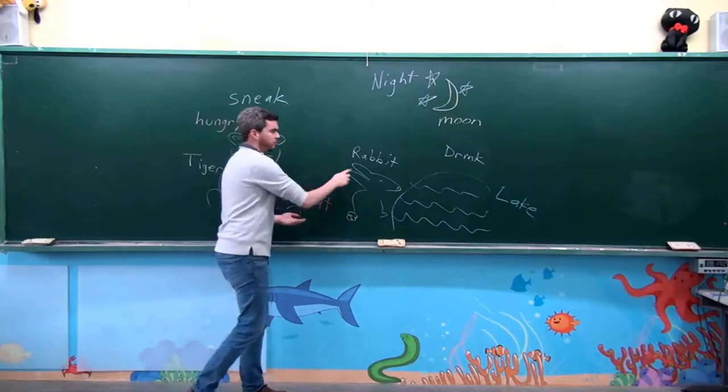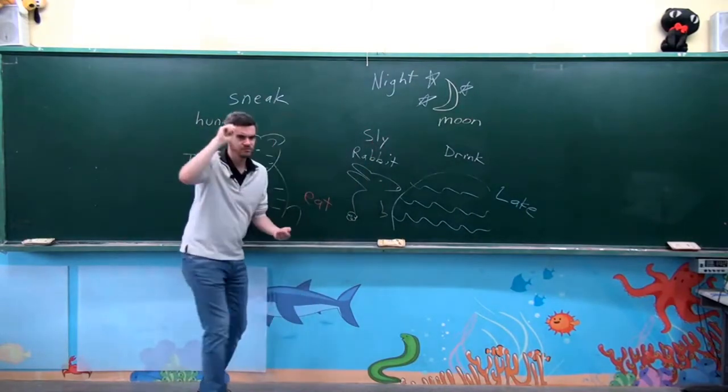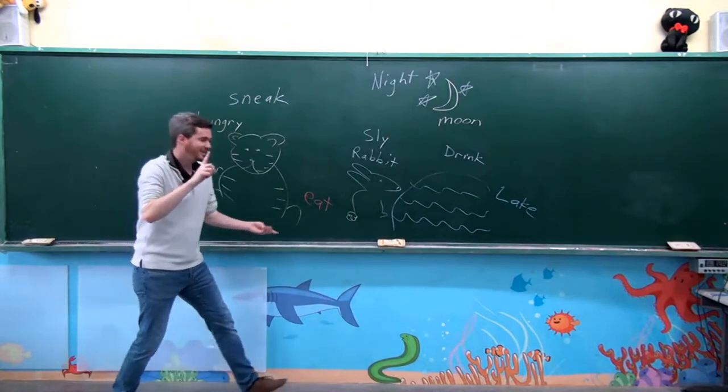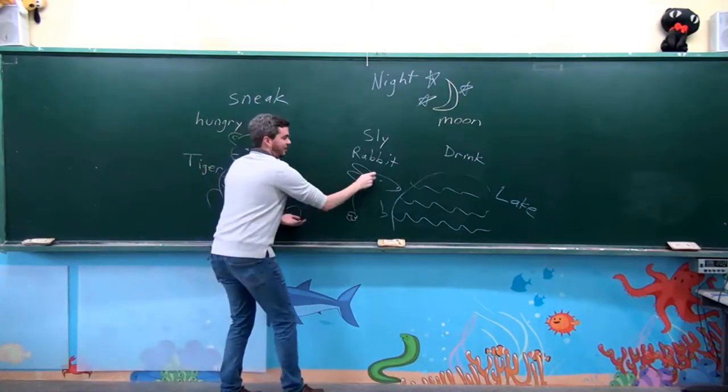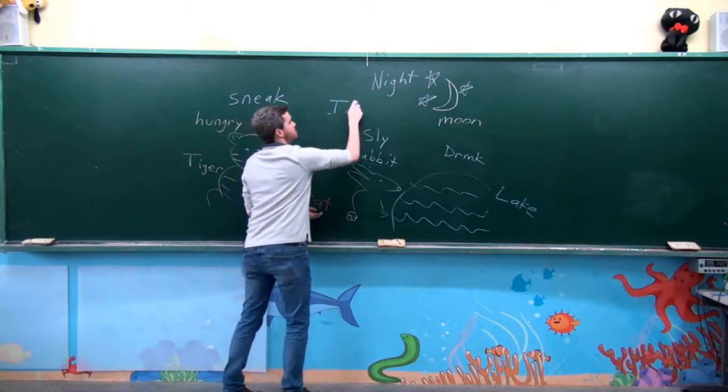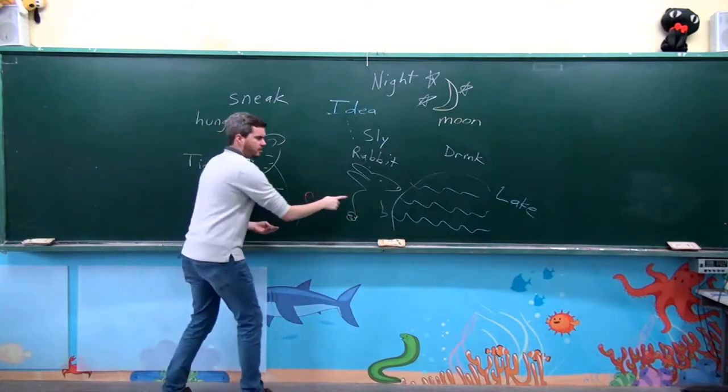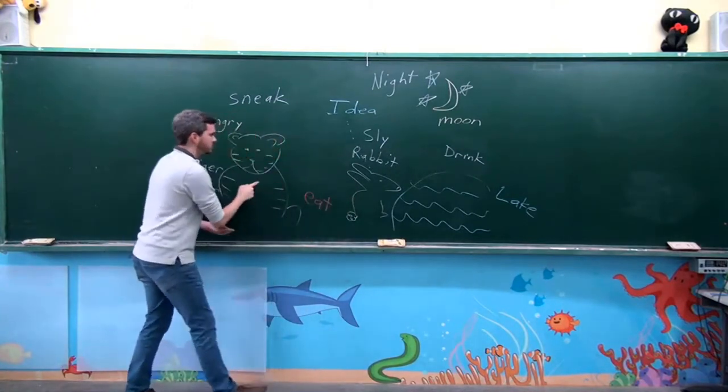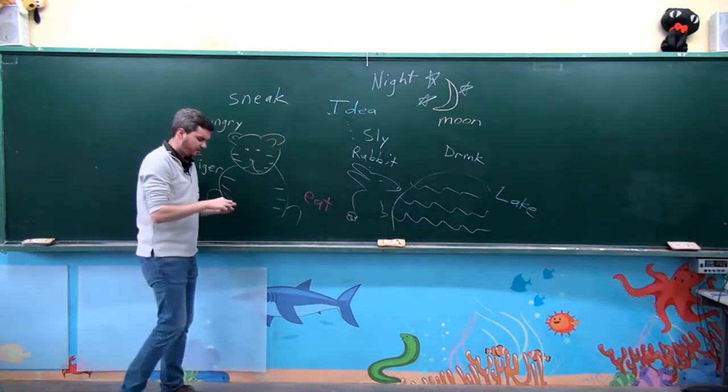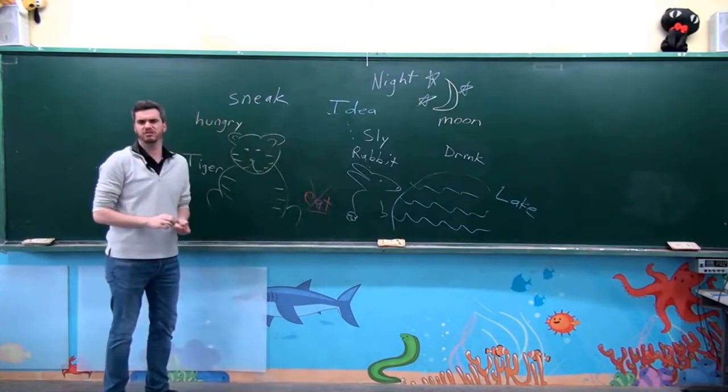Now, the rabbit. Remember, the rabbit is smart. The rabbit is sly. Very smart. So the rabbit gets an idea. Gets an idea. The rabbit says to the tiger, do not eat me. Do not eat me. No. Do not eat me.